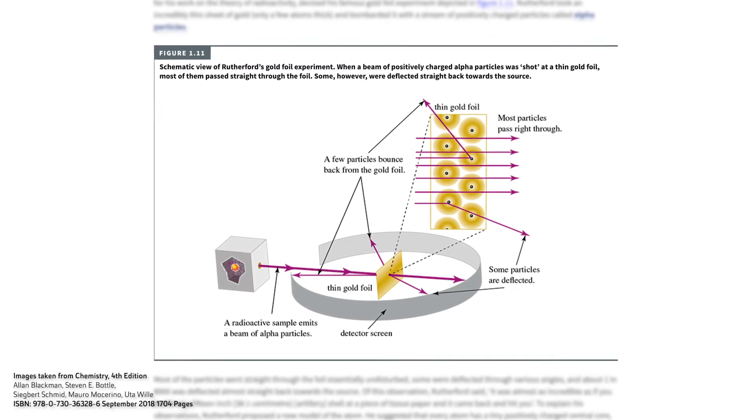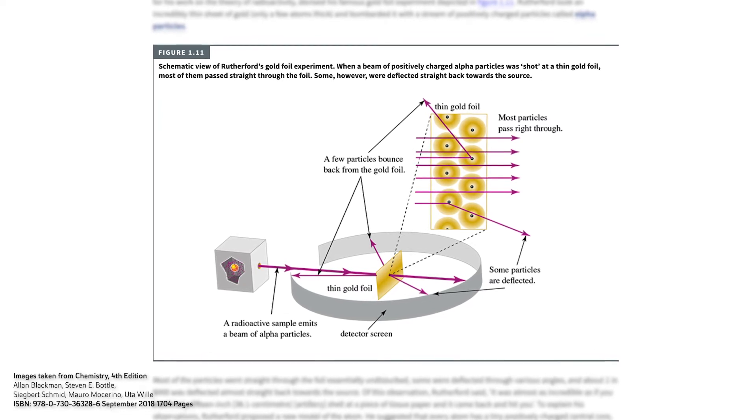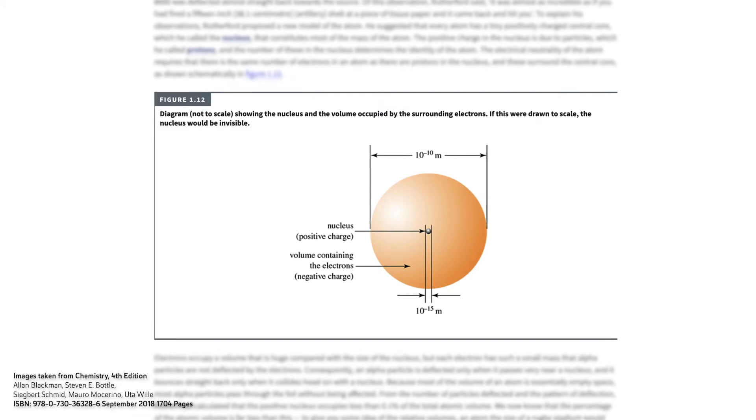Things get deflected because alpha particles come close to another positively charged region and get repelled. If they hit the nucleus bang on, they're going to bounce straight back — and so this all made sense. This became Rutherford's model of the atom: a central, massive, positively charged nucleus containing most of the mass, surrounded by mostly empty space inhabited by the negatively charged component of the atom — the electrons.